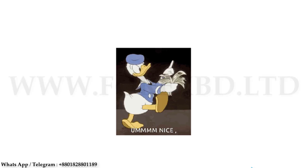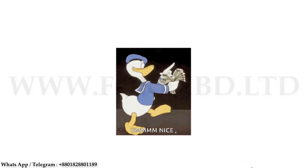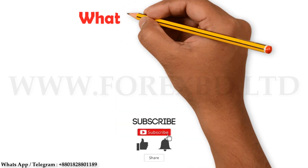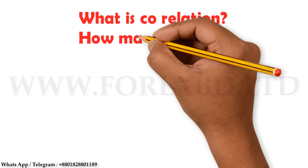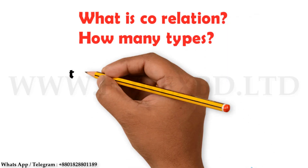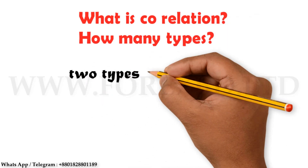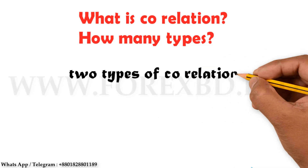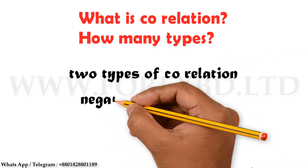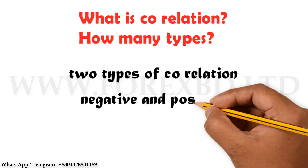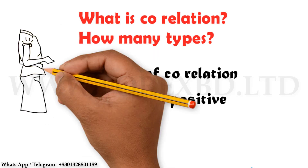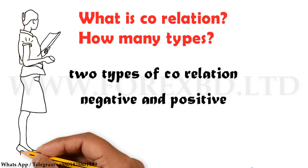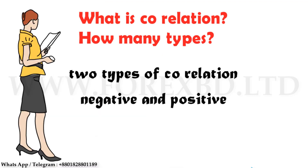Hi forex traders, hope you all are well. I'm an official member of Forex BD. The topic I will talk about today is forex correlation. So what is forex correlation and how many types are there? Forex correlation is a relationship — forex pairs have a negative and positive correlation. For example, if euro/USD goes up then USD/CHF goes down, and if euro/USD goes up then GBP/USD also goes up. This relationship is called correlation.